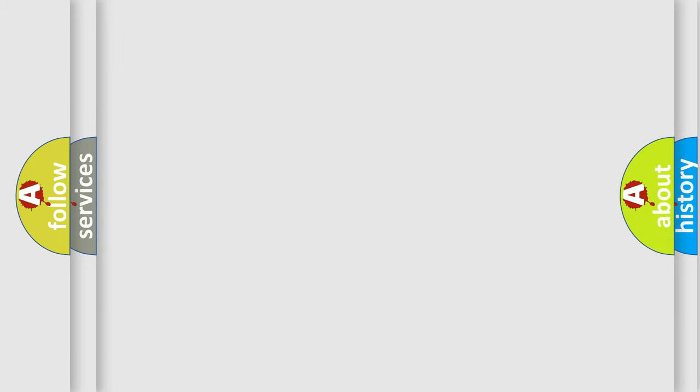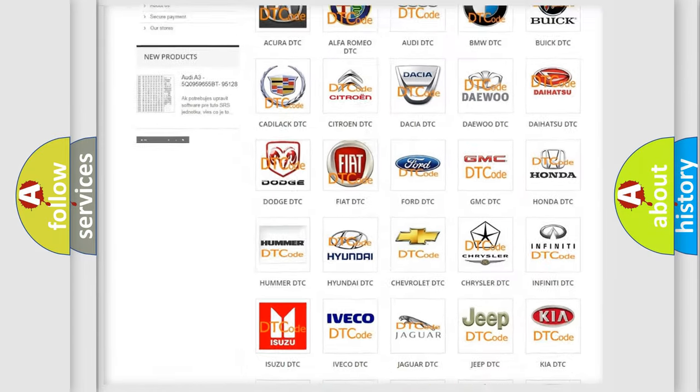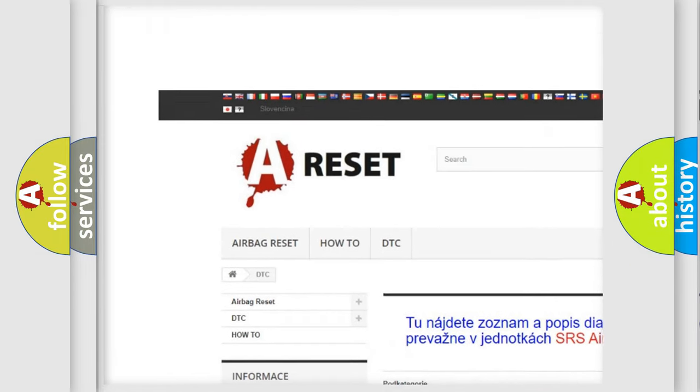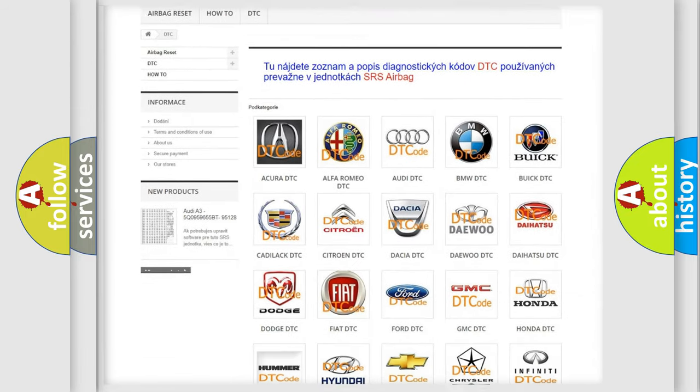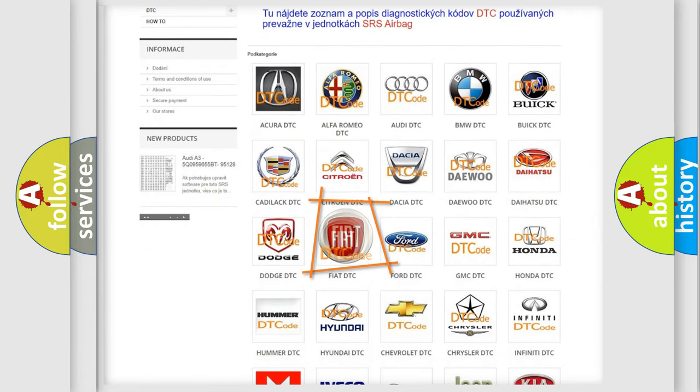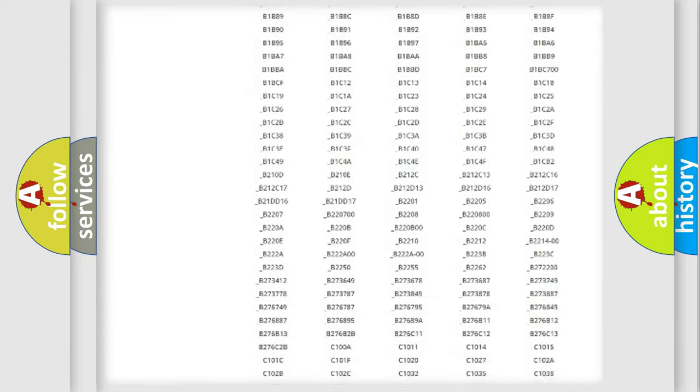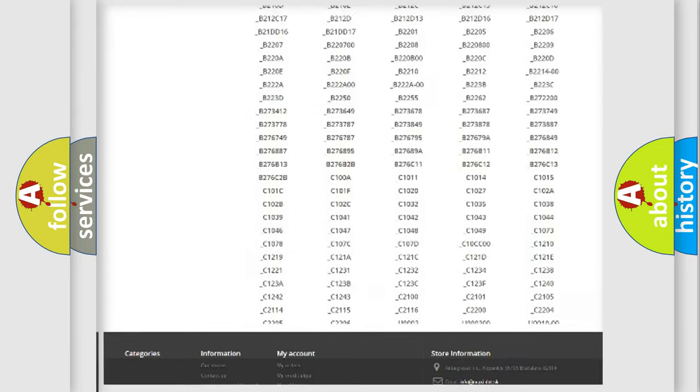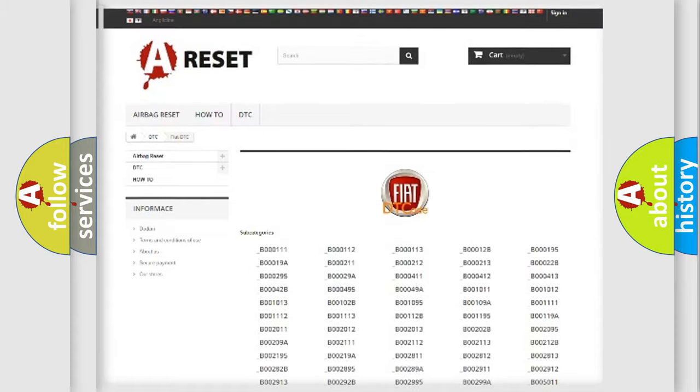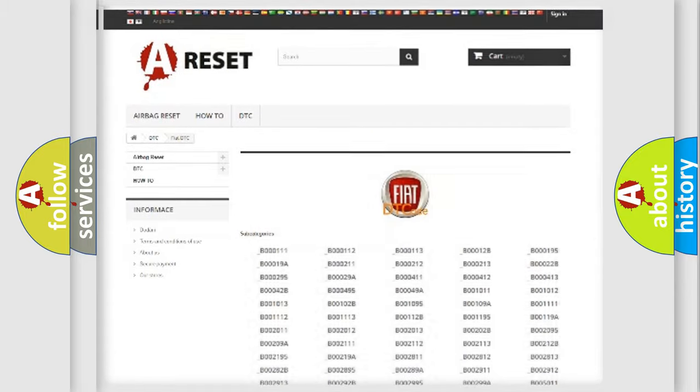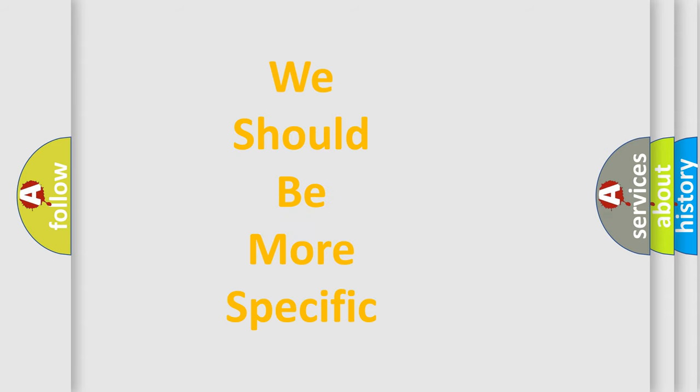Our website airbagreset.sk produces useful videos for you. You do not have to go through the OBD2 protocol anymore to know how to troubleshoot any car breakdown. You will find all the diagnostic codes that can be diagnosed in Fiat vehicles, also many other useful things. The following demonstration will help you look into the world of software for car control units.